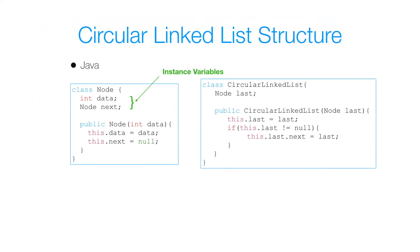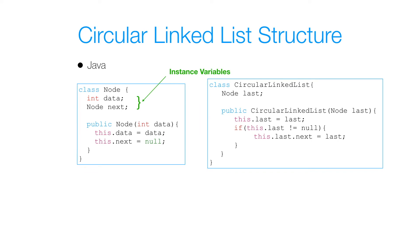Now let's get to the structure of a circular linked list. Here I have two classes: a node class and a circular linked list class. My node class is the exact same node class that would be used for a singly linked list. However, in my circular linked list class there's a bit of a change.